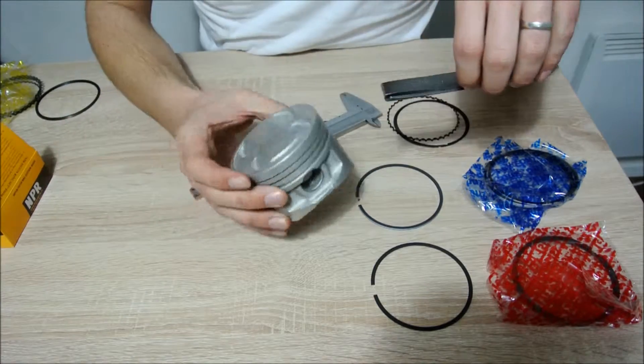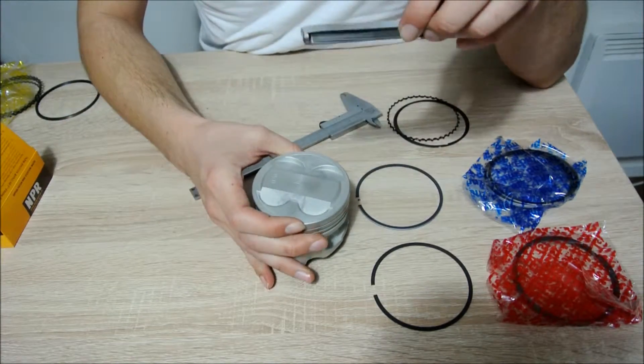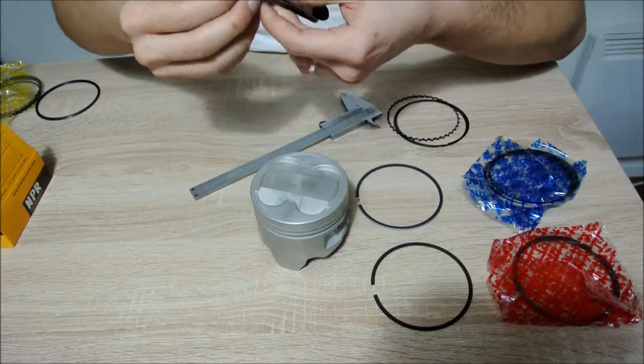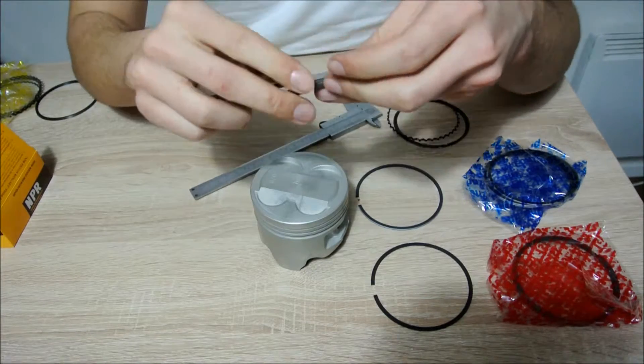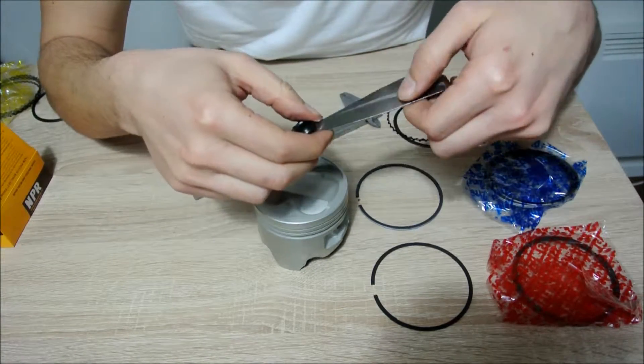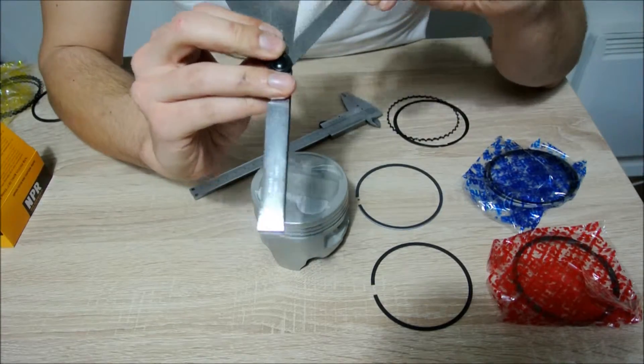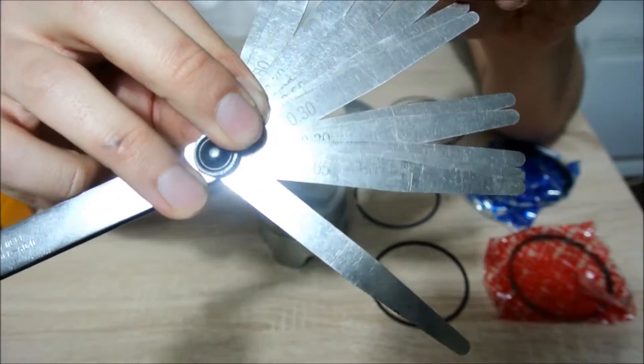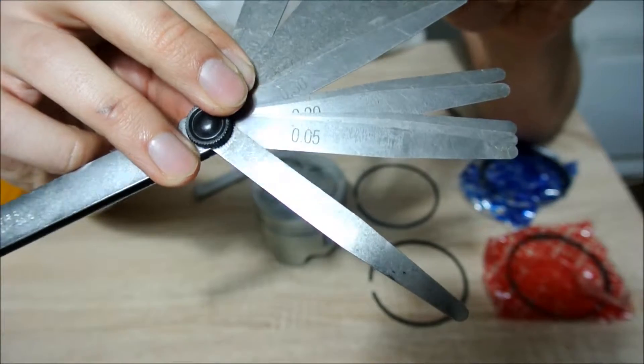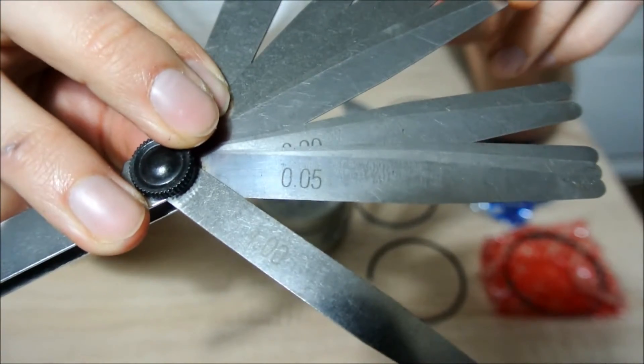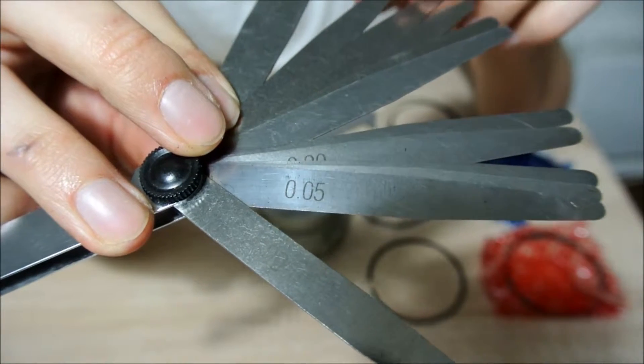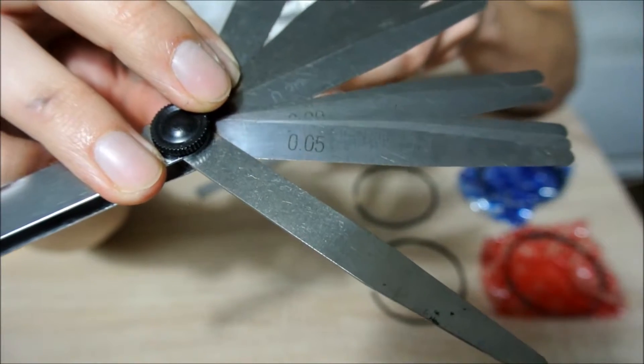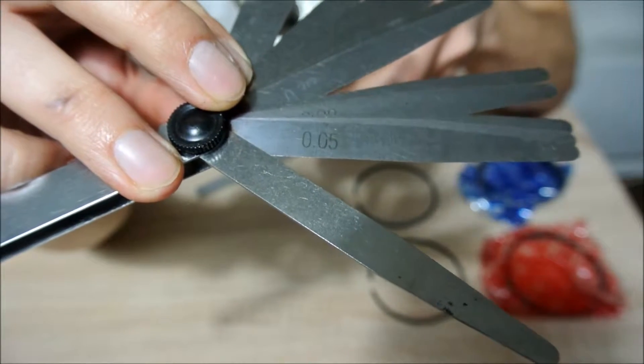The first thing I'm going to do is measure the piston ring grooves using a thickness gauge. Each of these thickness gauge leaves has a marking on it that corresponds to the number of millimeters. You combine the leaves until you get a perfect fit for the piston ring groove.